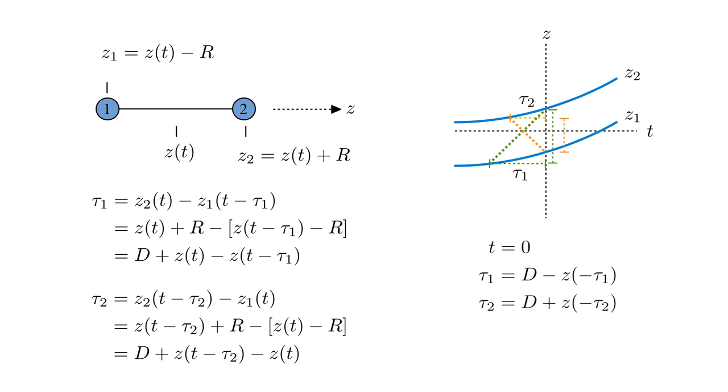For simplicity, let's take T equals zero. Then tau-one equals D minus Z of minus tau-one, and tau-two equals D plus Z of minus tau-two.